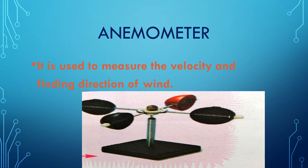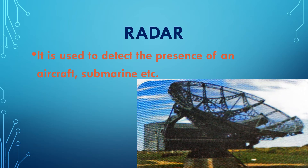Next is the anemometer. Anemometer is used to measure the velocity and find the direction of the wind. Wind flows in different directions — east, west, north, south. You can see there are four round-shaped structures which rotate and tell us the direction in which the wind is flowing.